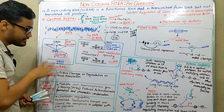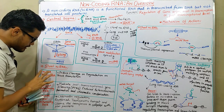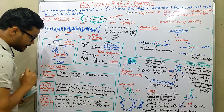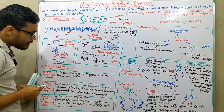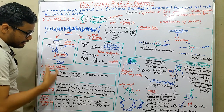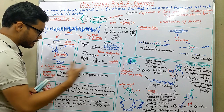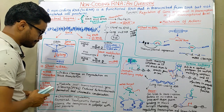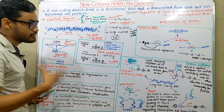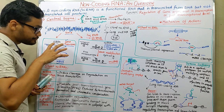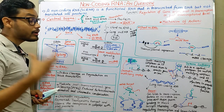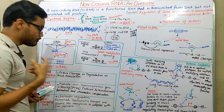Classifying short non-coding RNAs by their function: the first is miRNA (microRNA). The major function of miRNA is to induce cleavage or degradation of mRNA, or to block translation. So miRNA acts primarily by blocking translation.